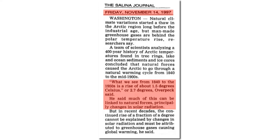Twenty years ago, NOAA's leading Arctic expert James Overpeck said that the Arctic had warmed by 1.5 degrees Celsius from 1840 to 1950, and it was largely natural. He said much of this can be linked to natural forces, principally changes in solar radiation. But then he went on to say, in recent decades the continued rise of a fraction of a degree cannot be explained by changes in solar radiation and must be attributed to greenhouse gases causing global warming. Let's analyze Overpeck's claim that greenhouse gases have caused recent warming in the Arctic and see where it came from.